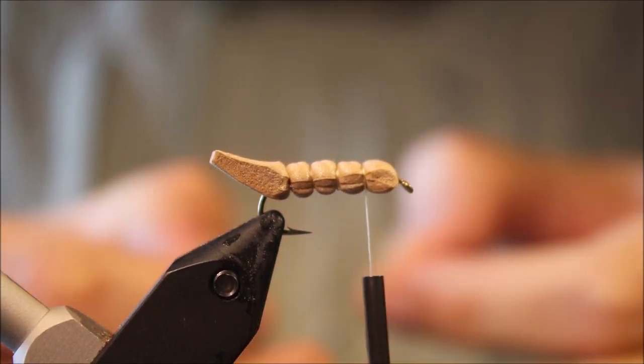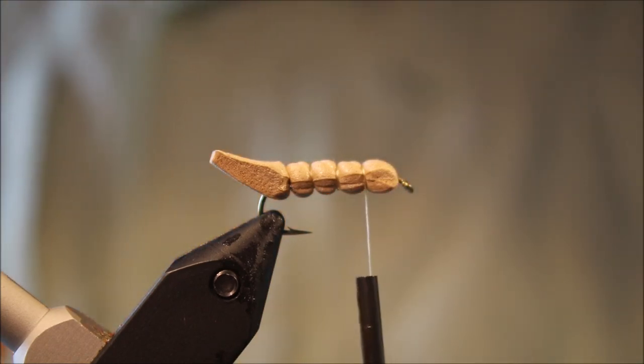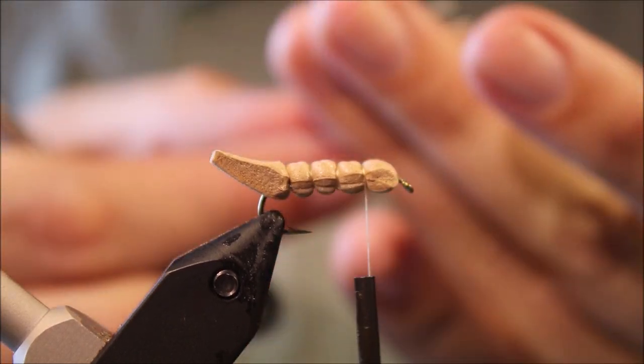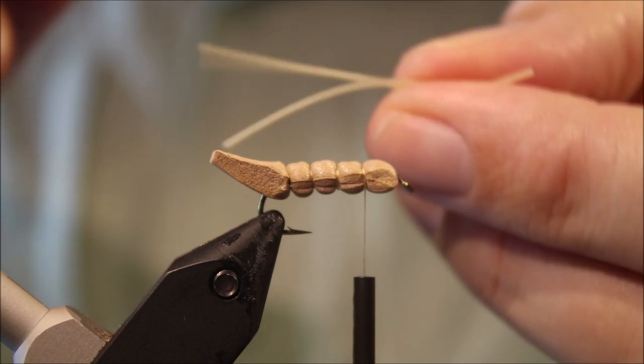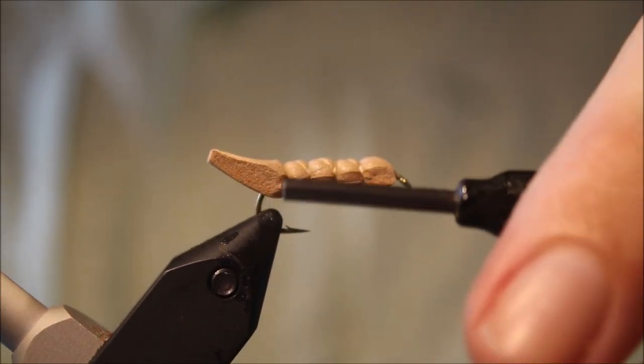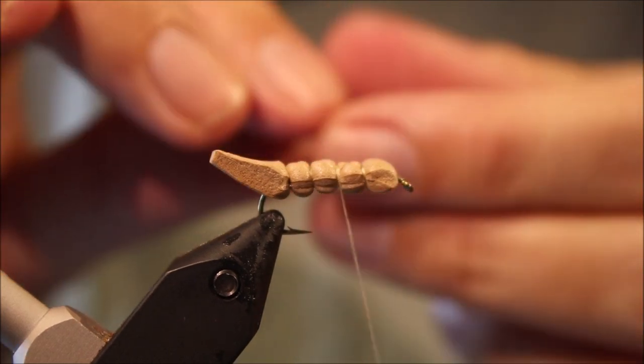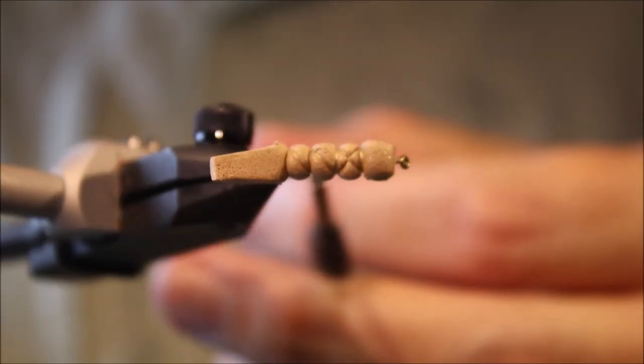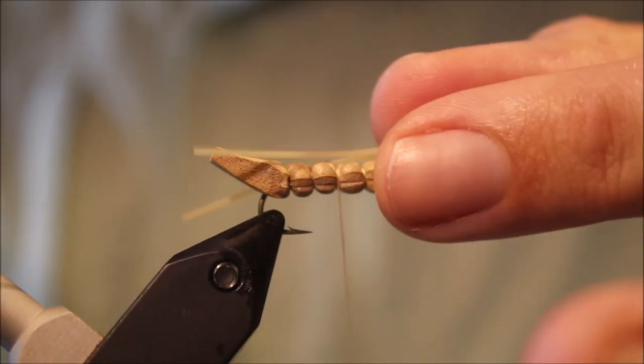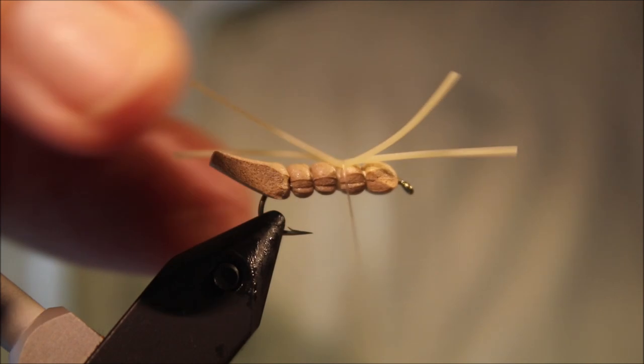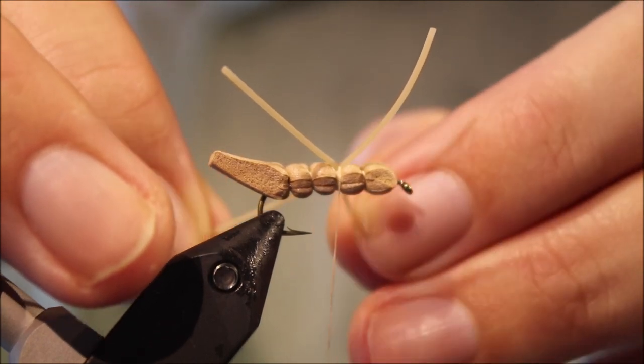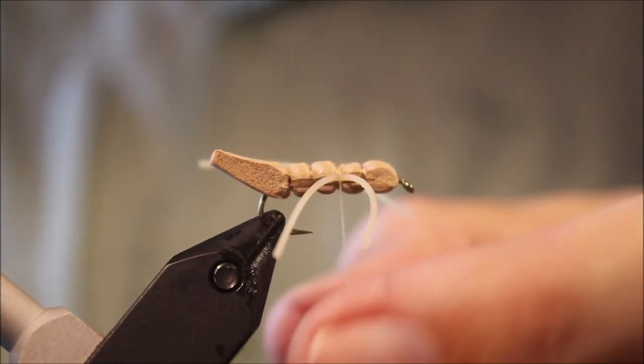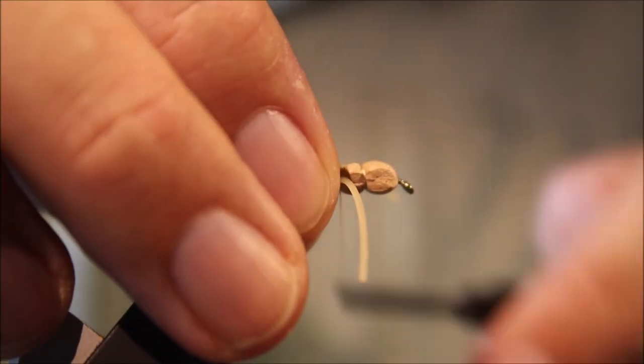Legs, up to you. I'm using just round rubber. I'm going to take my thread back to the second segment, so I've got a small X at the top. Just offer these in, one or two turns is fine. Then you can position your legs. Another turn's enough to hold it and then I'll come back to the front here.